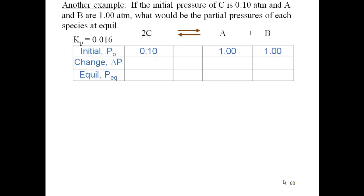All right, let's look at another example. If the initial pressure of C is 0.1 atmospheres, and A and B are 1 atmosphere, what would be the partial pressures of each species at equilibrium? So we set up our ICE table. Got your initial, your change, and your equilibrium values. So you plug in your initial values, which is 0.1 for C, 1 for A, and 1 for B.